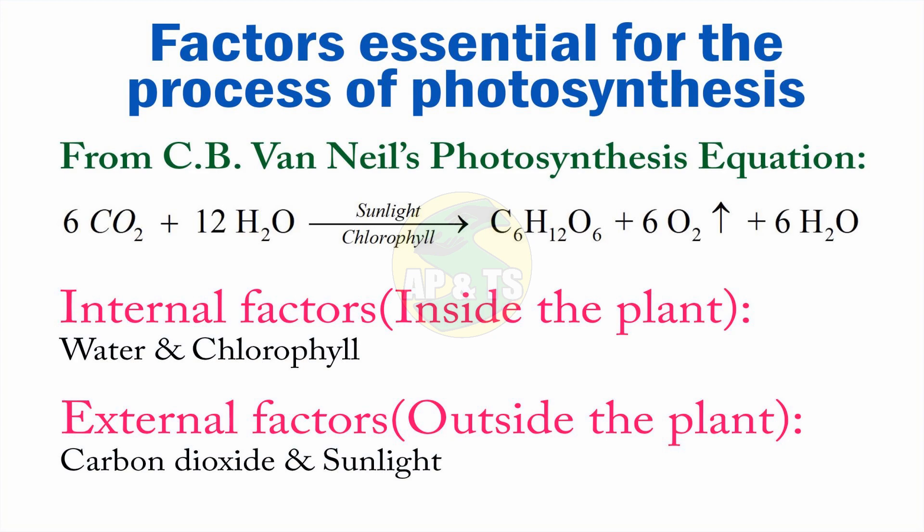If these four are present, then only photosynthesis will go on. If any one of these is missing, photosynthesis cannot take place. Now, these four factors are divided into two types: internal factors and external factors.